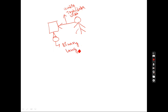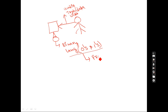You already know that a computer can understand only one language — that language is called binary language. What is the meaning of binary language? Any information which can be represented in the form of zeros and ones is called binary language. Whatever data is given by the user, the computer can understand only binary language, that is zeros and ones.